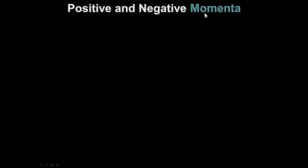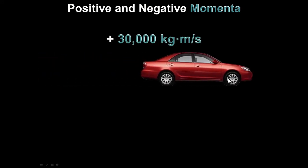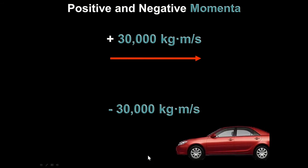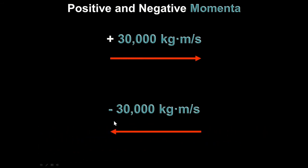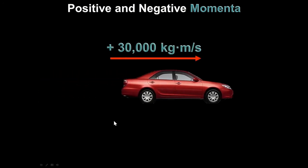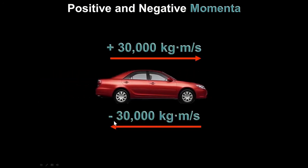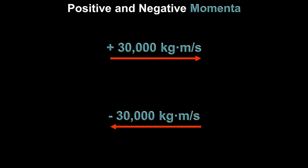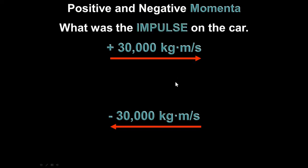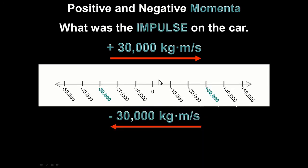Momentum is a vector quantity. If the car is going to the right it has positive momentum; going to the left gives negative momentum. If a car was going to the right, comes to a stop, turns around and goes backwards — the change in momentum is not zero. It went from a positive value all the way to a negative value on the number line. That change in momentum — or impulse — was 60,000 newton-seconds, changing momentum by 60,000 kilogram meters per second.